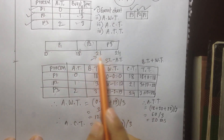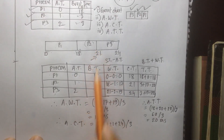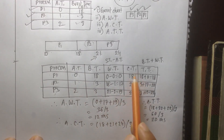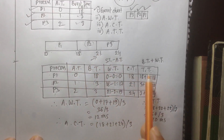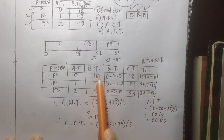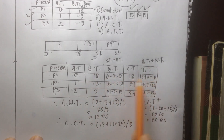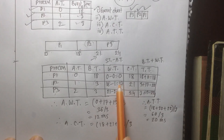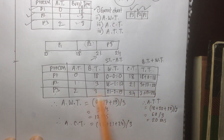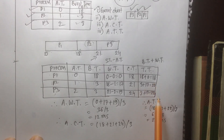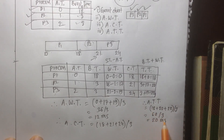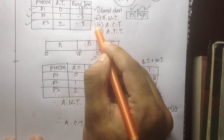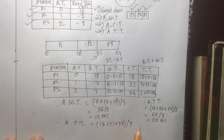Completion times are 18, 21, 24. Turnaround times: P1 = 18 + 0 = 18, P2 = 3 + 17 = 20, P3 = 3 + 19 = 22. So average turnaround time = (18 + 20 + 22) / 3 = 60 / 3 = 20ms. The average waiting time is 12ms, the average completion time and average turnaround time are also computed.